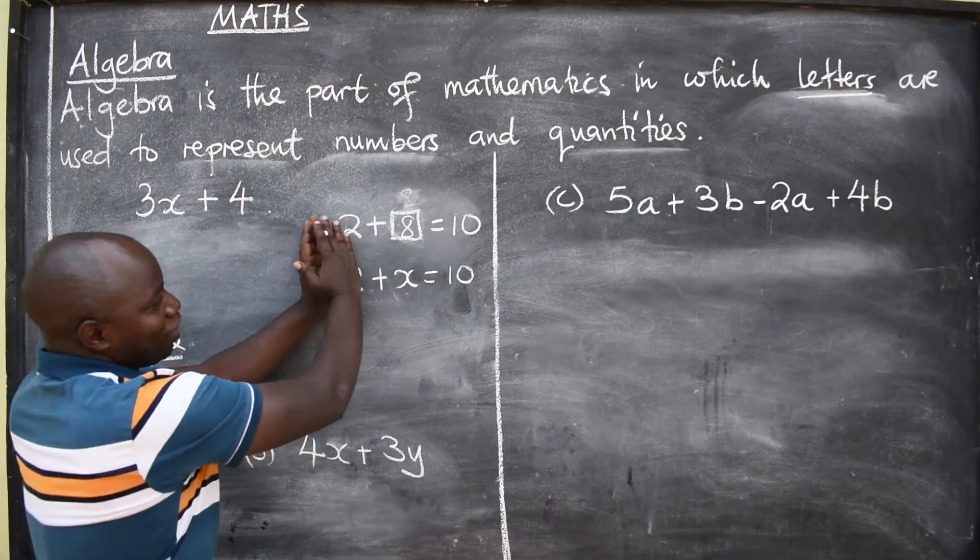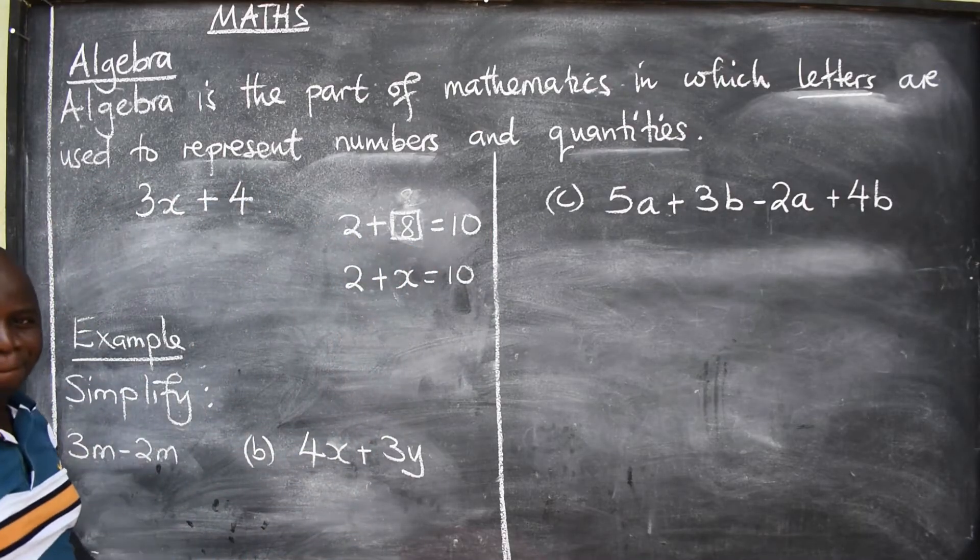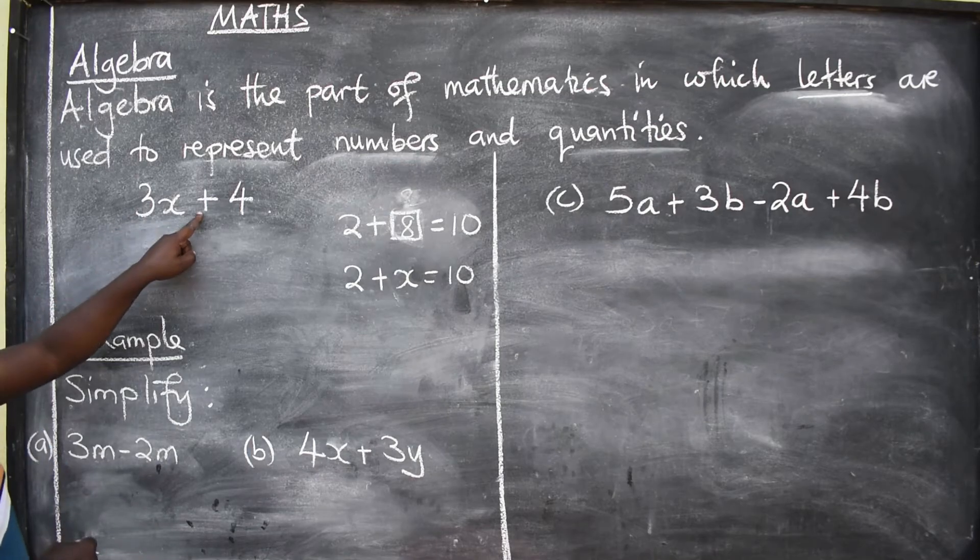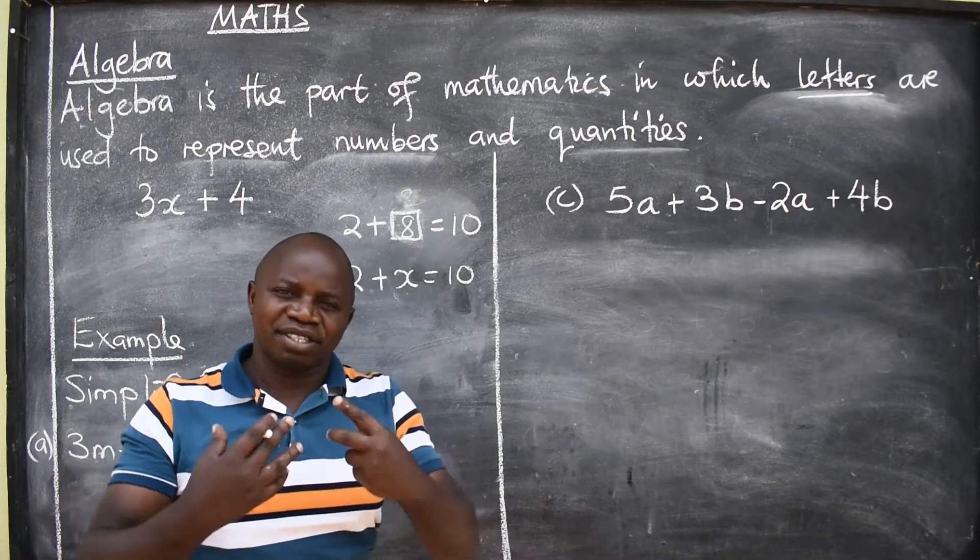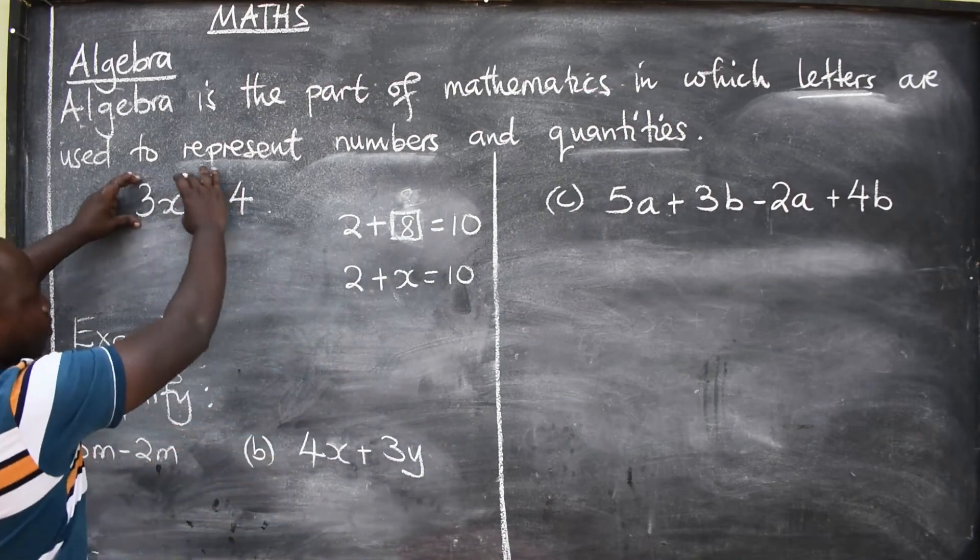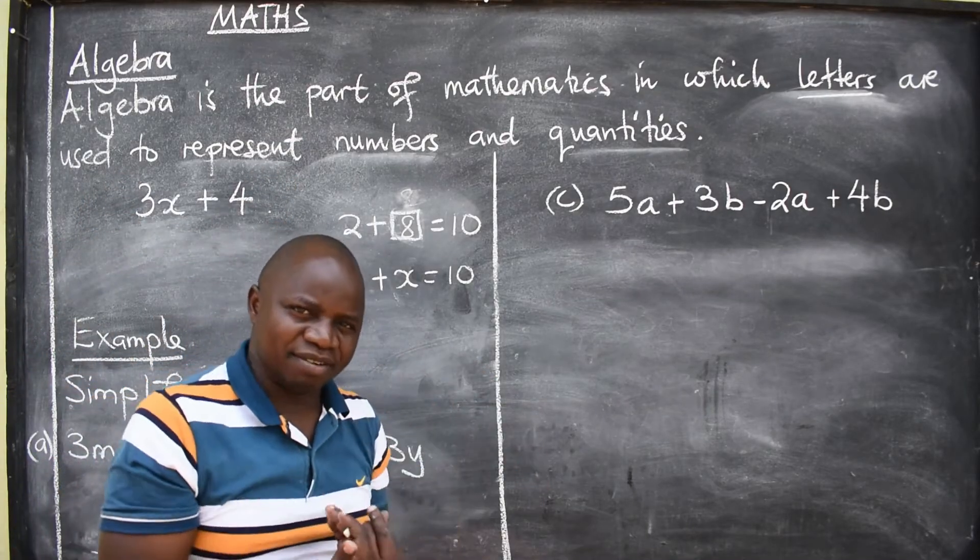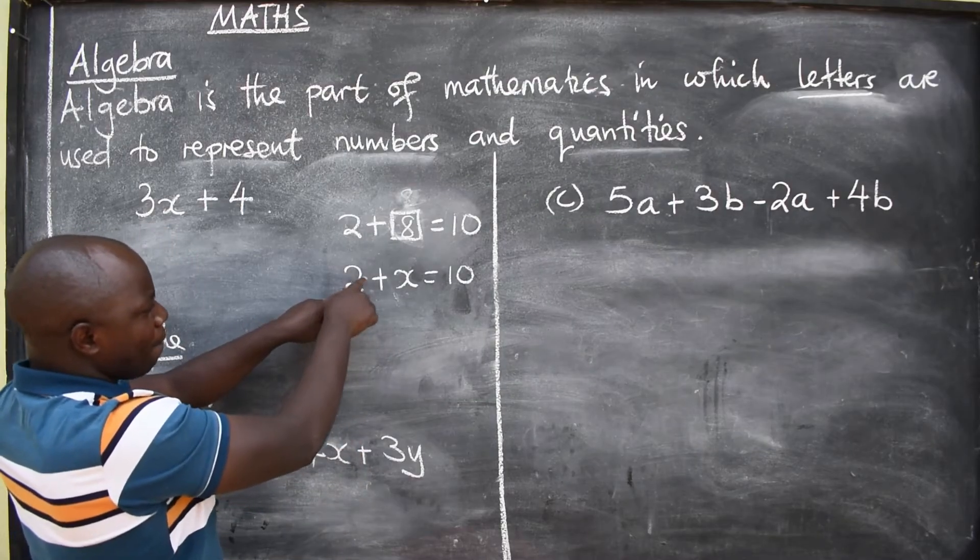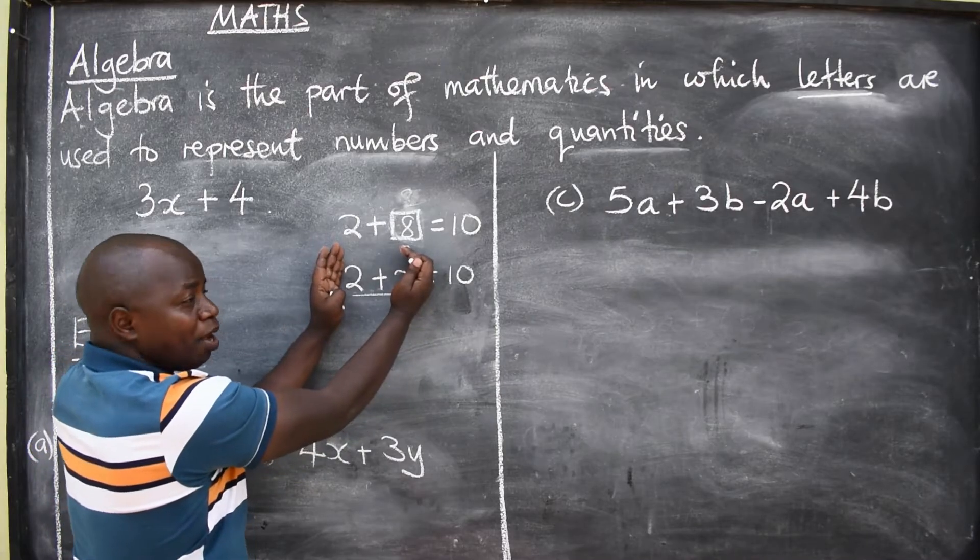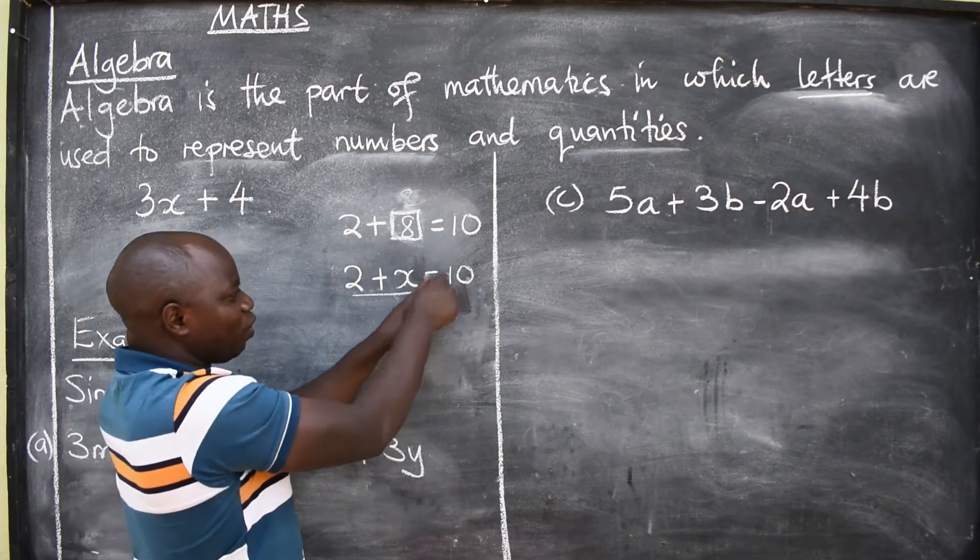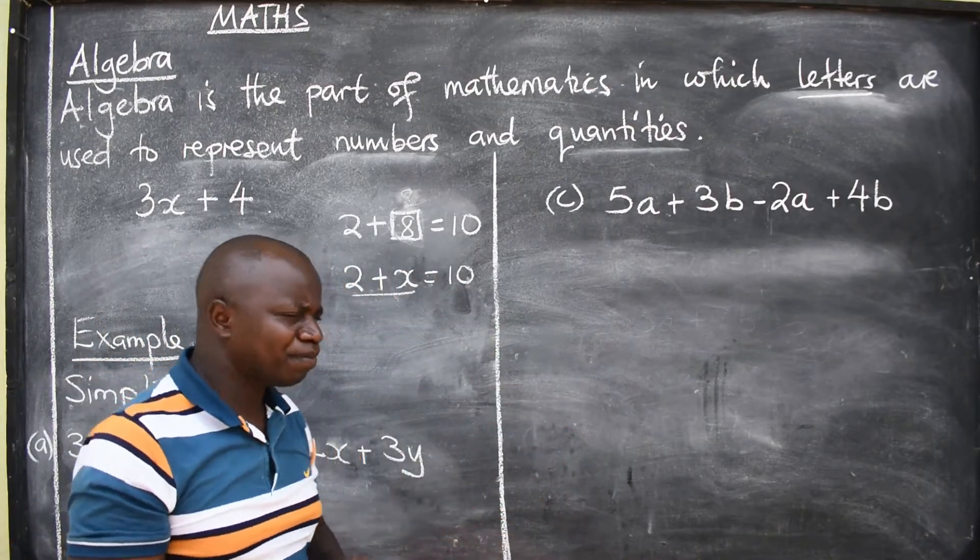Now, we are not talking about equations here. Let's look at this expression here. We have 3x plus 4. This is called an algebraic expression. This is an expression. The moment you equate an expression to something - look at this - 2 plus x ending here, this is an expression. But when I equate it to something like equal to 10, it becomes what? Equation.